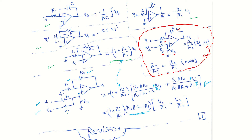If you have more than two inputs it becomes straightforward. The fixed term always contains R1 parallel with R2 parallel with R3 parallel with any additional resistance, times V1/R1 plus V2/R2 plus V3/R3 plus V4 over its corresponding resistance. This is a revision of all the circuits we have discussed.